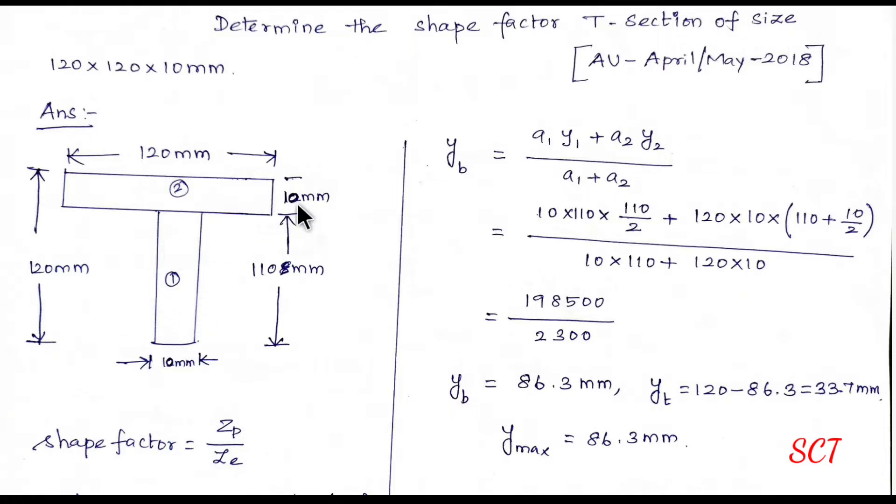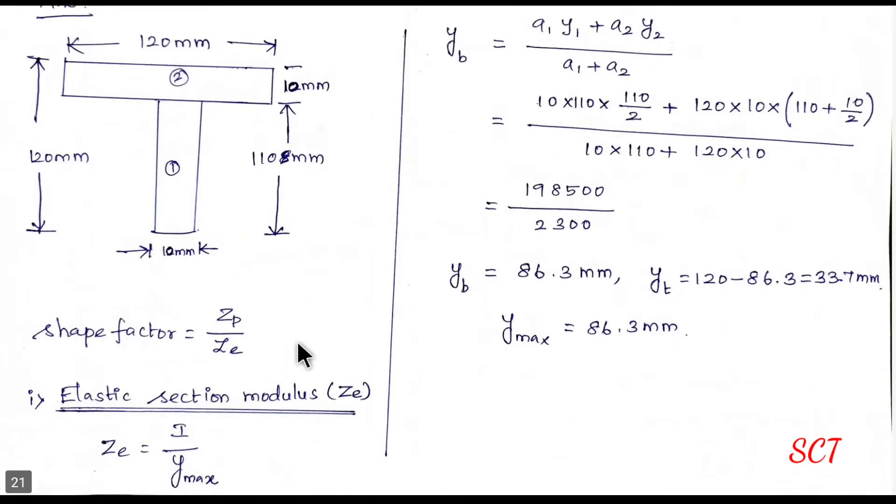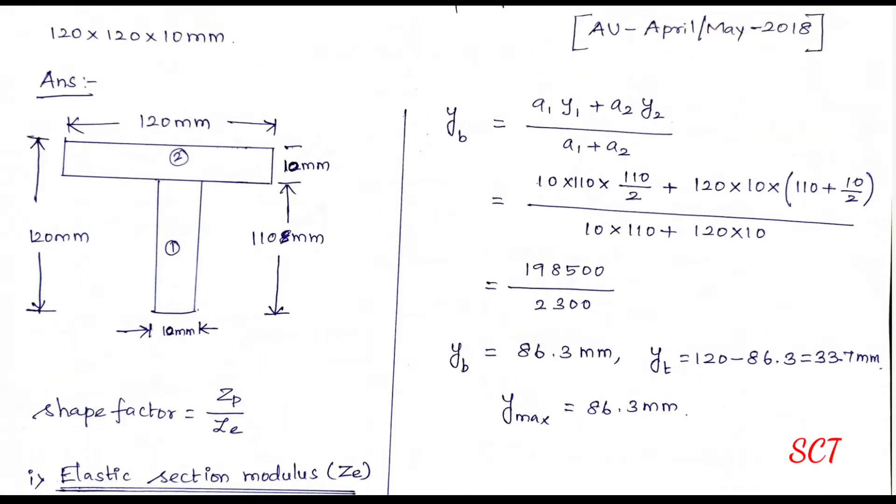Let's take the data to 10 mm, 120, 10 mm. So this is the y bar. First, shape factor. Shape factor formula, shape factor S is equal to ZP by ZE. So this is the first section, this is the second section.